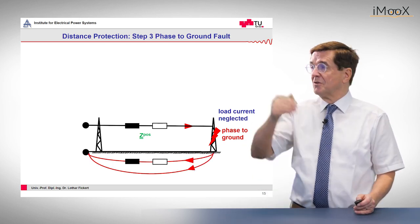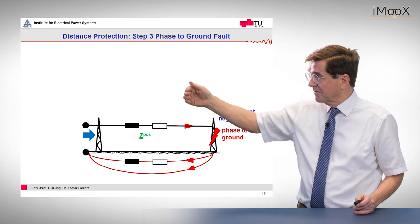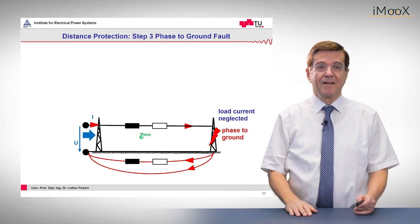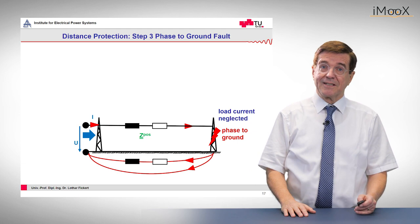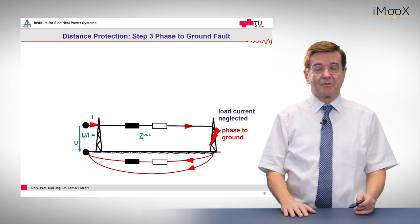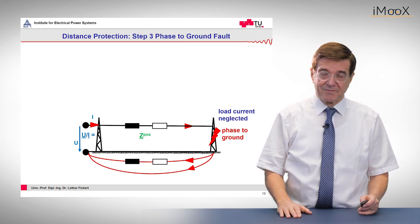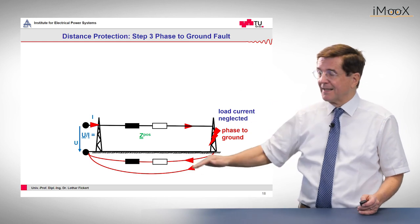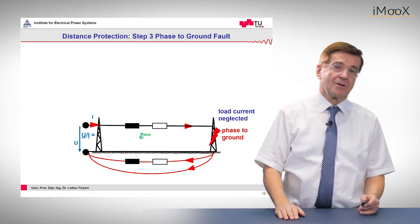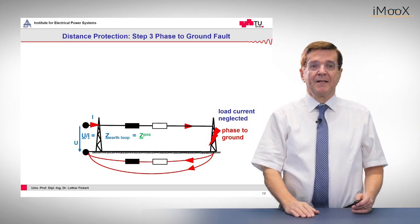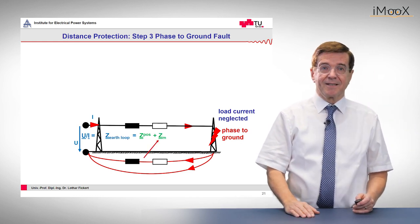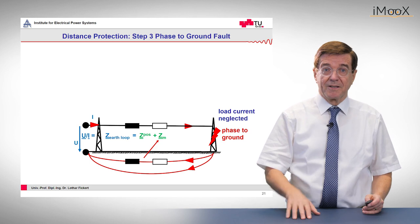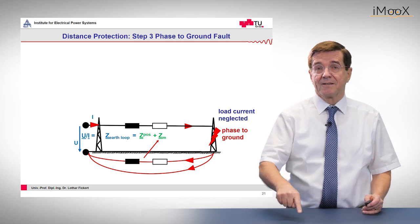The current comes from the left through the line, goes down to ground, and returns through the ground path. The distance relay measures the phase-to-ground voltage and the current, and from this it would like to conclude what is the impedance value of the fault. The whole loop is made up of the positive sequence impedance — some people say the impedance above ground — plus the earth impedance, which is underground. By the way, in a cable network it is the sheath impedance.